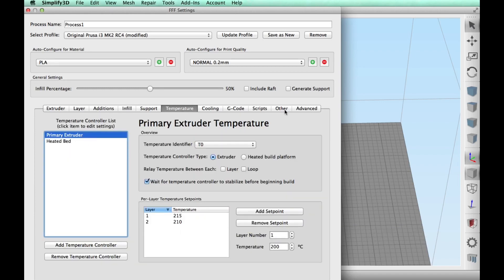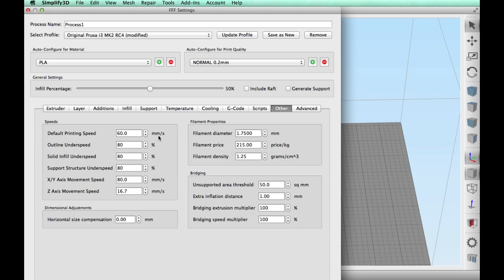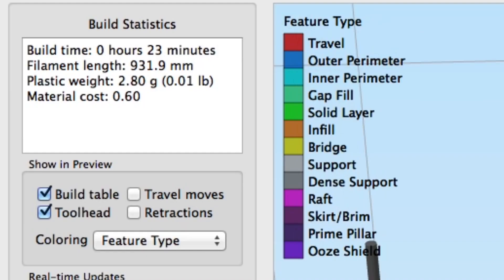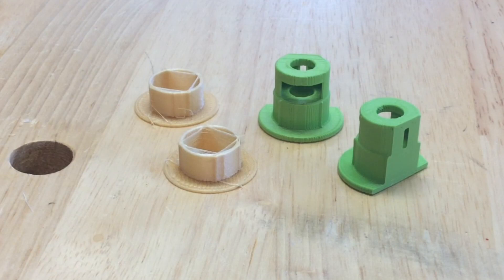No supports because the way I laid it out there I don't need supports. Cooling is enabled, 60 millimeters per second. I sliced it and this thing said it would take 23 minutes and under a meter of plastic. So I sent it to the printer and here's a couple of them printed out.